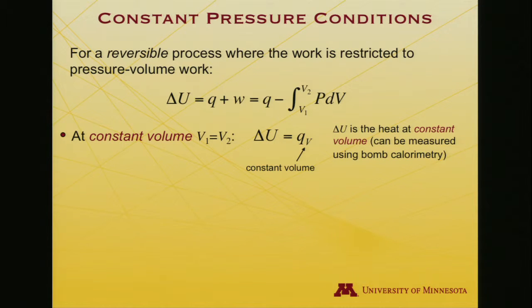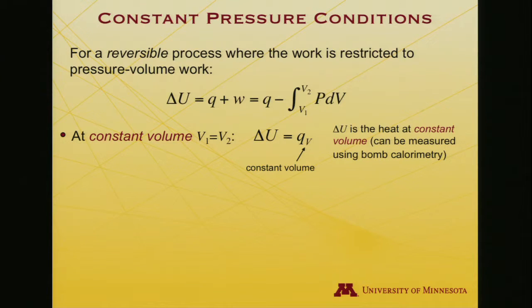At constant volume, there is no change in volume — V1 equals V2 — so delta U is equal to the heat transfer at constant volume. In that case, heat becomes a state function. That is actually a measurement that can be done; it's an experiment called bomb calorimetry. You put some reacting system into a so-called bomb — a vessel that is extremely rigid — you screw the top down tight, and you watch the heat change. And so you also know the internal energy change.